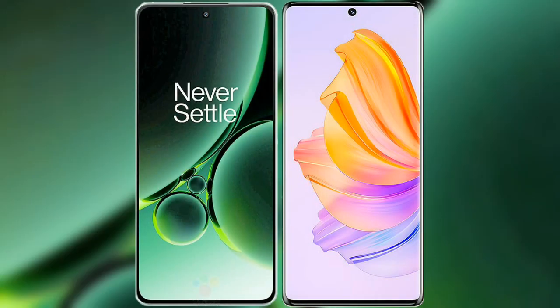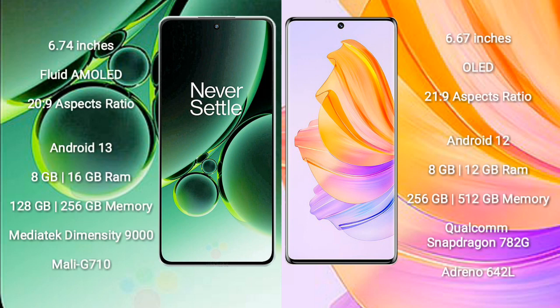I will compare the new OnePlus Nord 3 with Honor 80. OnePlus Nord 3 comes with a 6.74-inch flat AMOLED display and a 20:9 aspect ratio. Honor 80 comes with a 6.67-inch OLED display and a 21:9 aspect ratio.